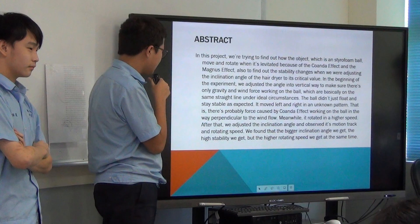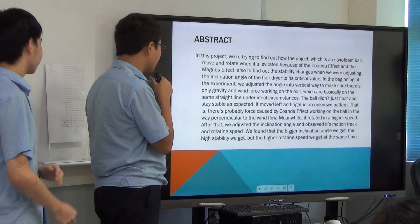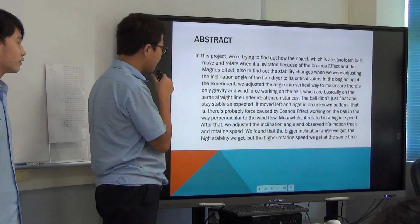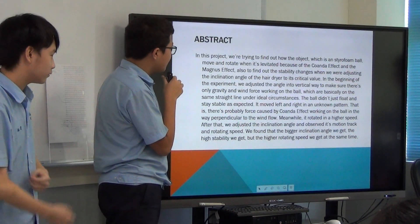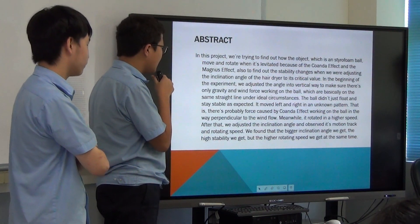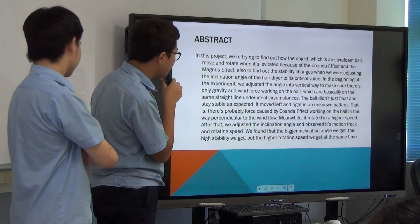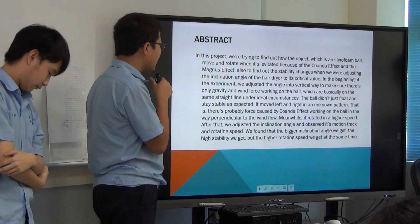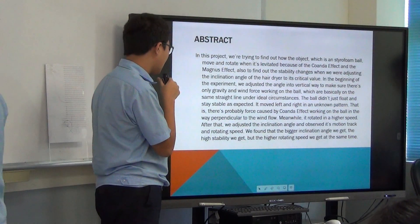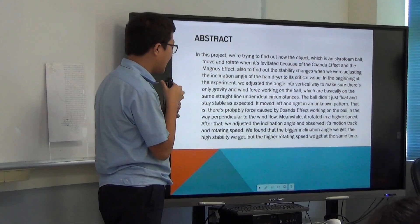It moved and drifted in an unknown pattern. There is probably a force caused by the Coanda effect working on the ball — in waves, current, and circular motion relative to the wind flow. It also rotates at a higher speed. After that, we adjusted the inclination angle and observed its motion track and rotation speed. We found that the bigger the inclination angle, the higher stability we get, but also the higher rotating speed at the same time.